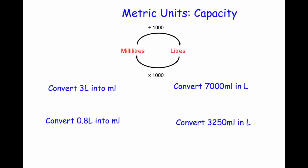So let's have a look at some questions now. The first question says convert 3 litres into millilitres. To go from litres into millilitres we times by 1000. So we do 3 times 1000 and that's going to be equal to 3000 millilitres. And that makes sense because one litre is 1000, so 3 litres would be 3000 millilitres.